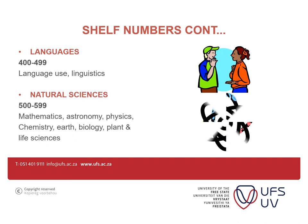Moving to 500 to 599, which is natural sciences. Natural science includes mathematics, astronomy, chemistry, biology, plant science, and life science. Mathematics is from 510 to 519. Physics is 530 to 539. Chemistry is 540 to 549. Biology is 570 to 579. Plant science is 580 to 589. And zoology is 590 to 599.